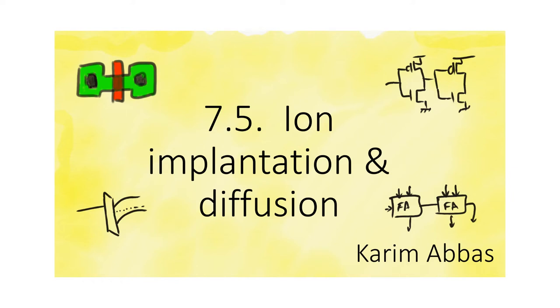When we create a feature on the surface of silicon wafers, we want to change the nature of the wafer in this feature. We can do this using one of two ways: either ion implantation or diffusion.